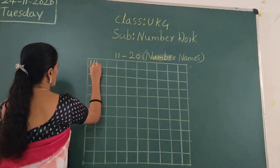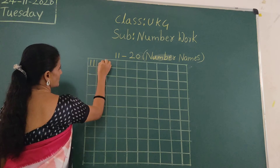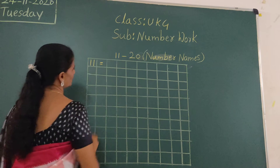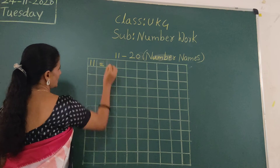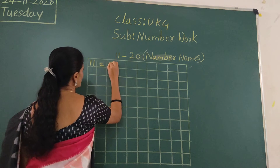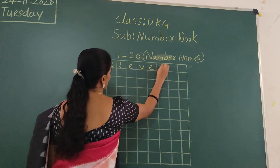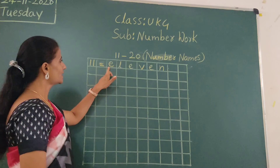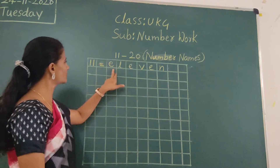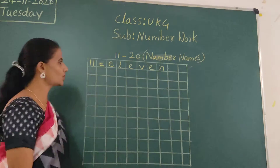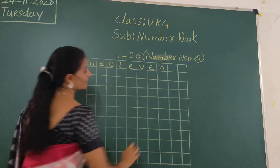11 — write 1, 1 in front of the first box. 11 is equal to E-L-E-V-E-N. Small letter only, right children? In one box, one letter. Don't write two letters in one box — one box, one letter. 11, E-L-E-V-E-N, 11.